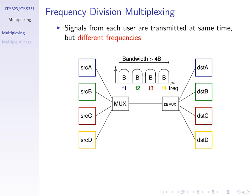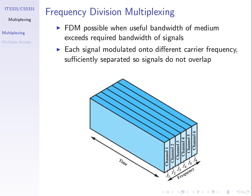Another view of frequency division multiplexing: we transmit the data from all users at the same time — on the same time scale — but using different frequencies. The channels correspond to different frequencies. For example, with six users we have six channels, and we transmit their data simultaneously, each using a different frequency.